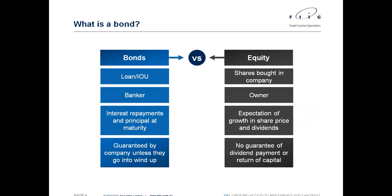A bond is just a loan from the investor to the company issuing the bond. When companies get big enough, instead of borrowing from banks they can borrow directly from the market. Because it's a loan, companies must pay interest when they say they're going to and must pay principal when they say they're going to — it's a legal obligation. If they don't pay interest and principal, there are serious consequences and the company goes into what's known as default, so they'll do just about everything they can to prevent that.